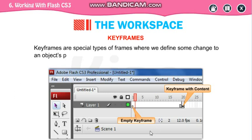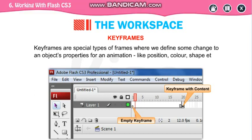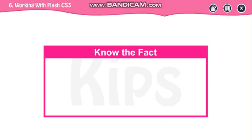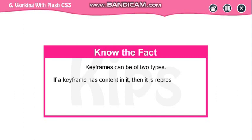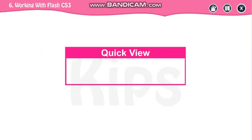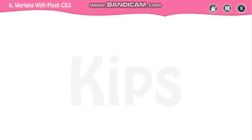Keyframe is used to show some changes in an object's position. We can easily change the length of the animation by dragging the keyframe in the timeline. Keyframe can be of two types: if the keyframe has content in it, it is represented by a dark circle; and an empty circle represents the empty keyframe. The shortcut to insert a keyframe is F6, and the shortcut to insert a frame is F5.